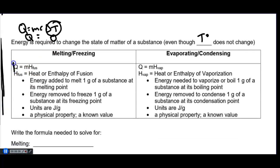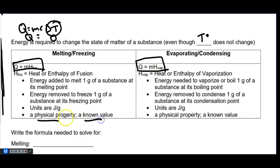We have two new formulas: Q = mH_fuse (heat of fusion) and Q = mH_vap (heat of vaporization). Basically the same formula — it's just that the heat of fusion and heat of vaporization are different physical constants that are plugged in. Heat of fusion is the energy needed to melt one gram of a substance at its melting point, with units of joules per gram. Heat of vaporization is the energy needed to evaporate one gram of the substance at its boiling point, also in joules per gram. Both are physical properties that you look up.